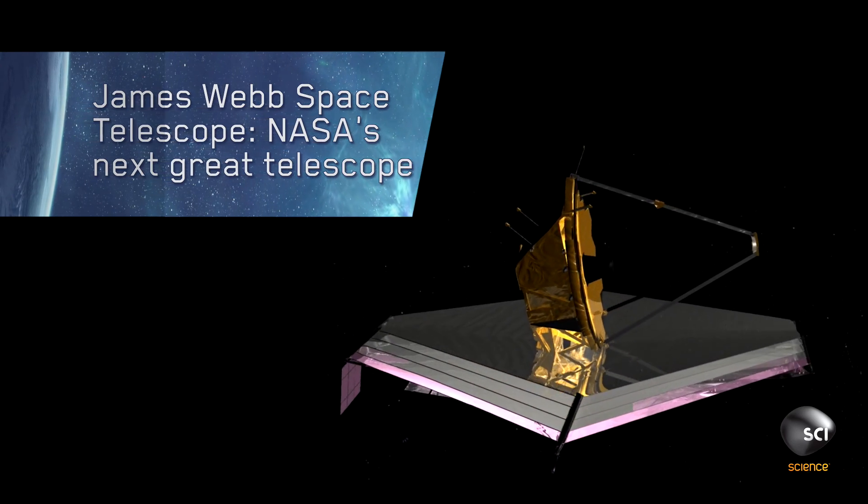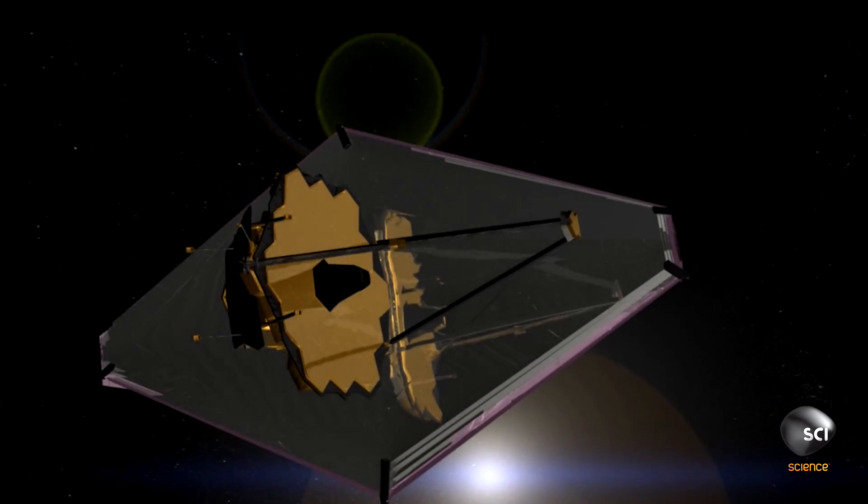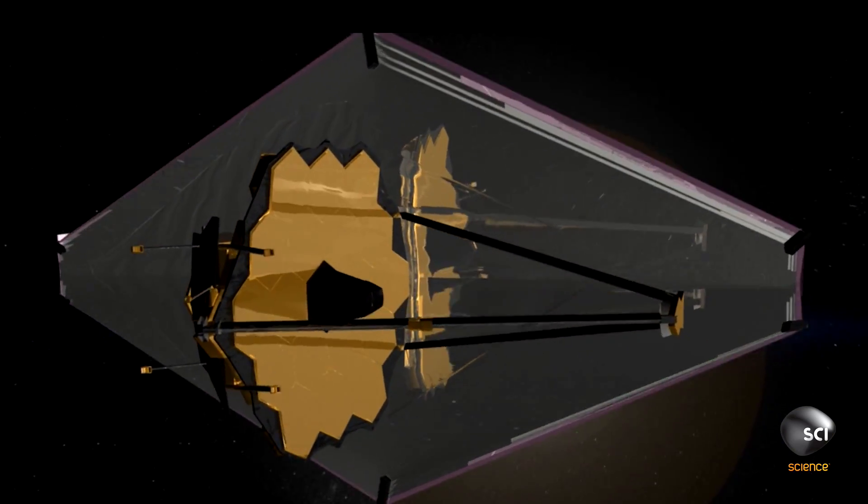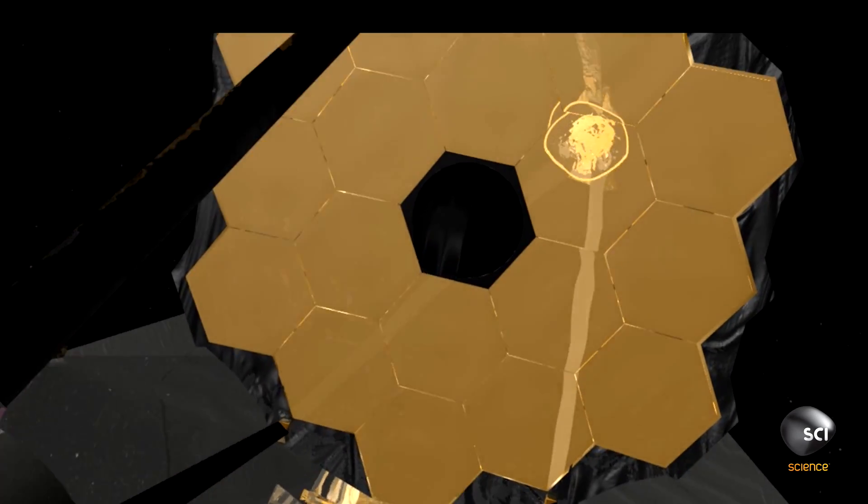And so with Webb, we're building it to detect a different type of light, infrared light. And the reason we're doing this is that the biggest questions in astronomy today really will be answered by looking at the universe in infrared light.